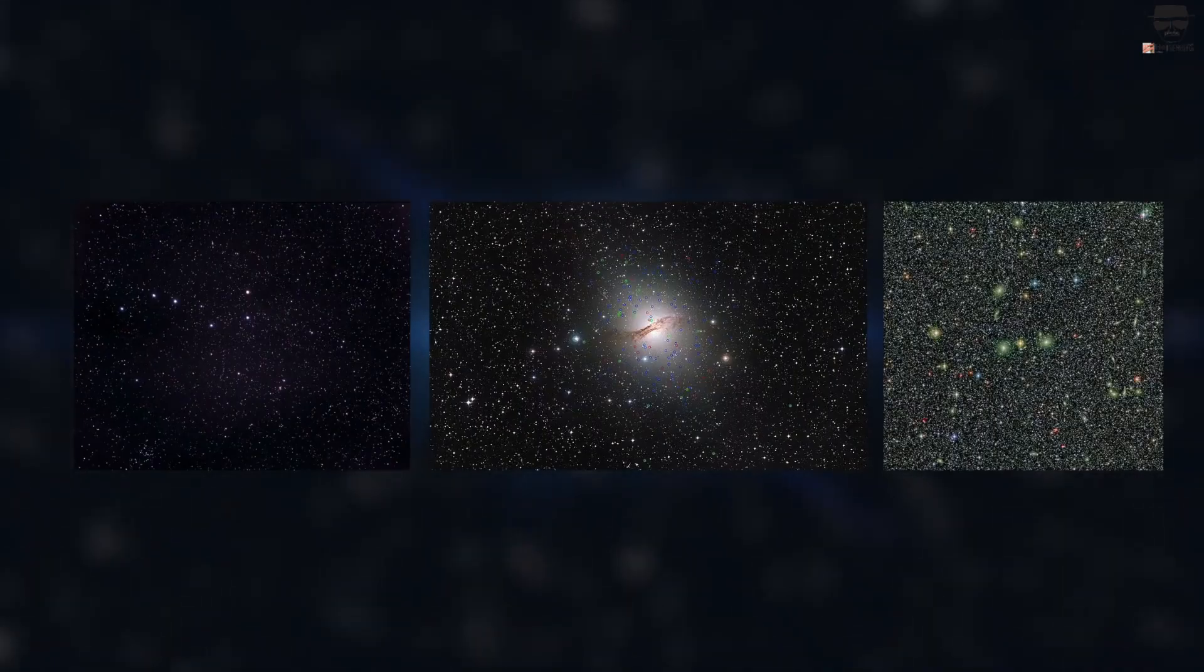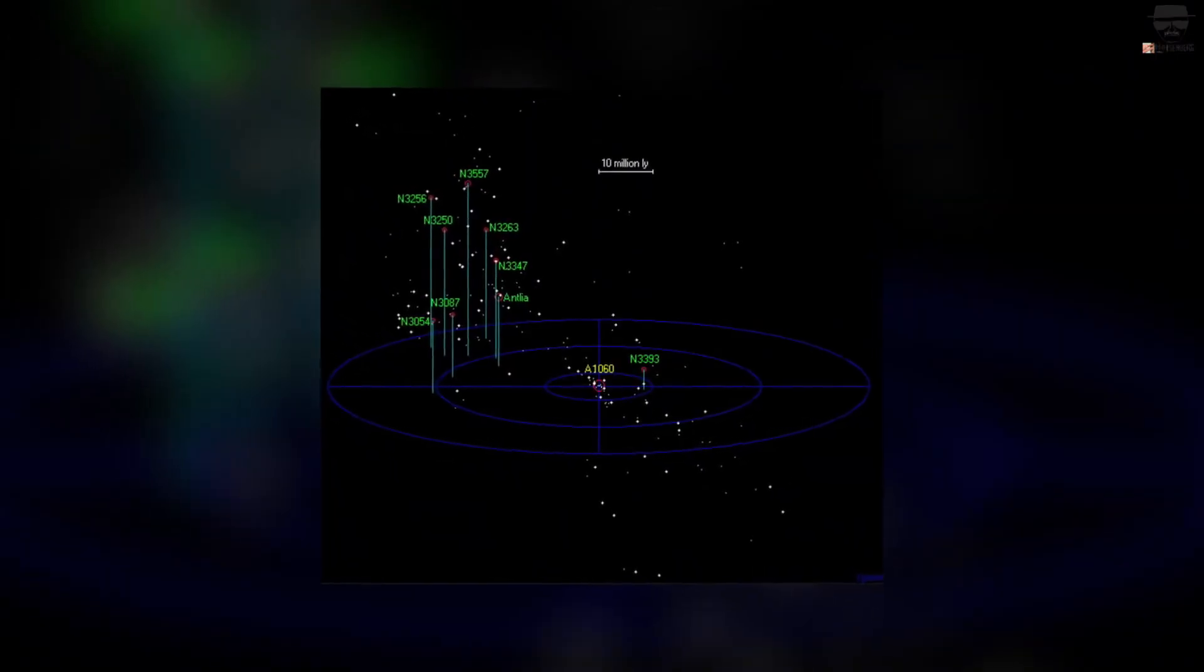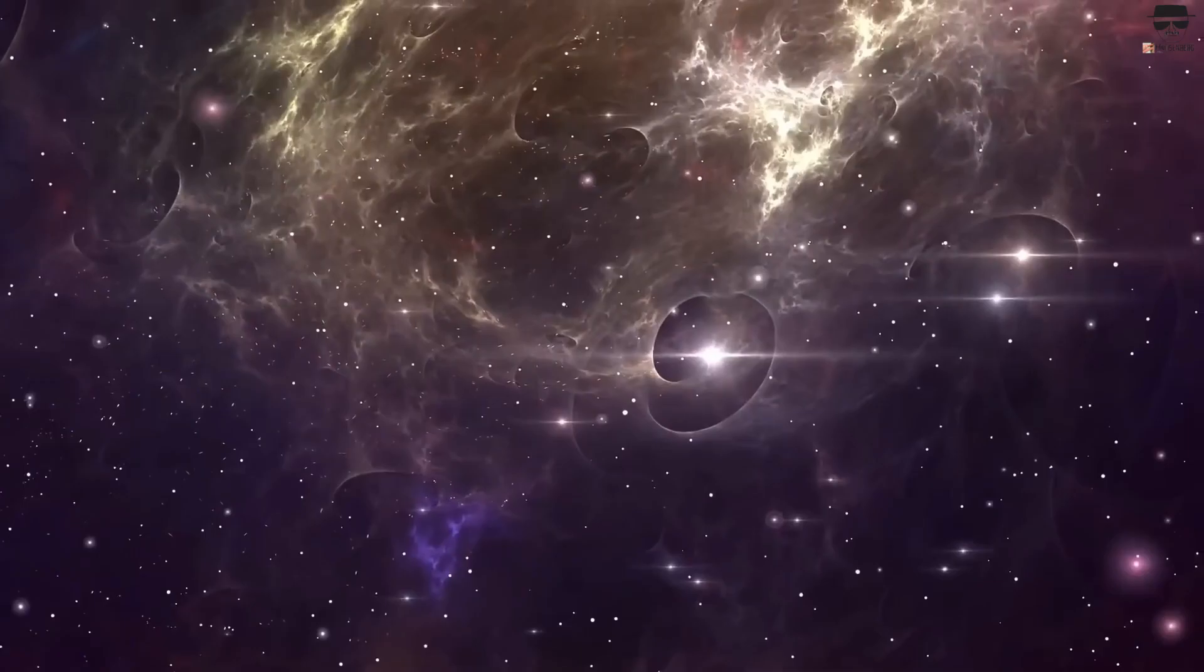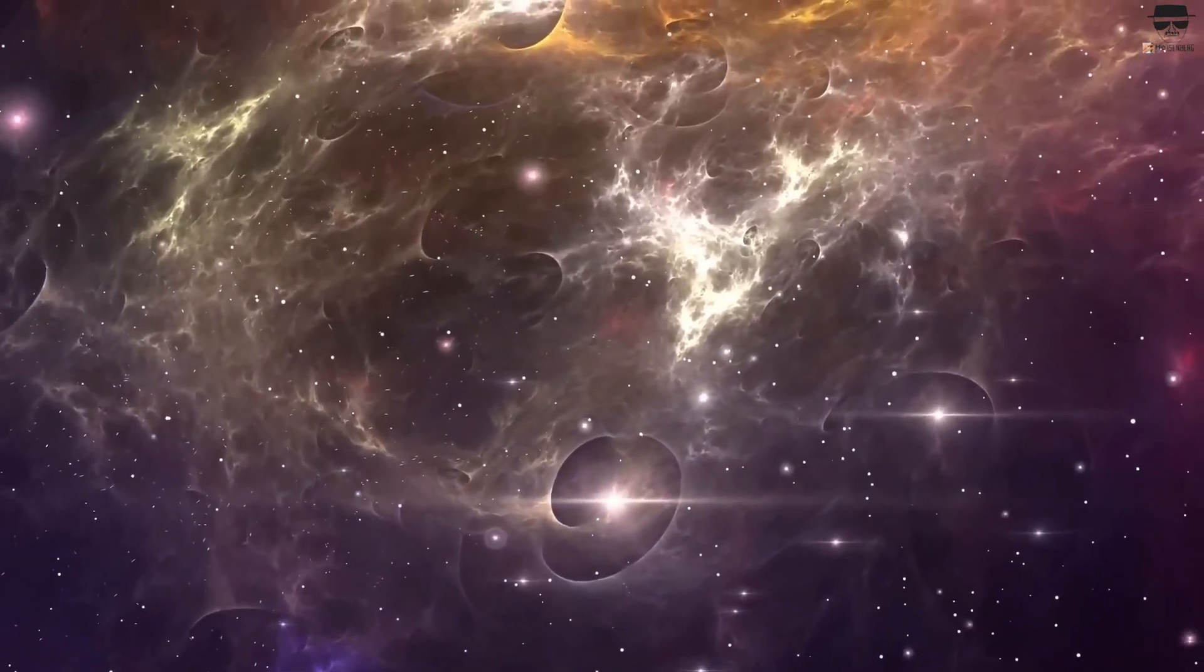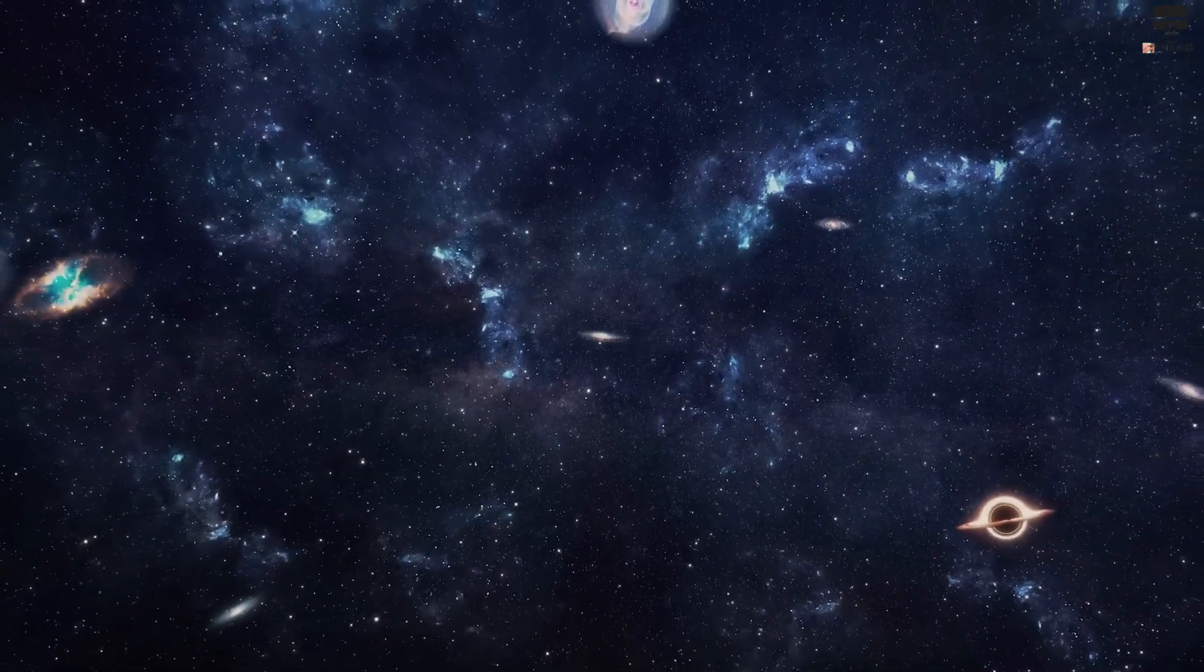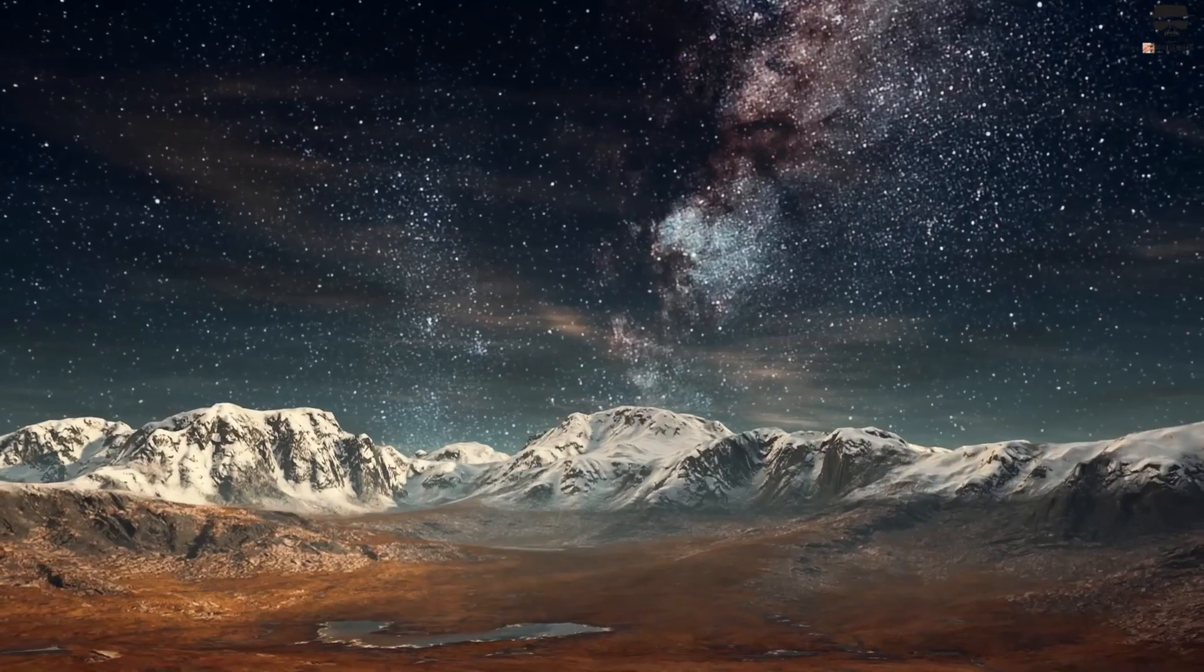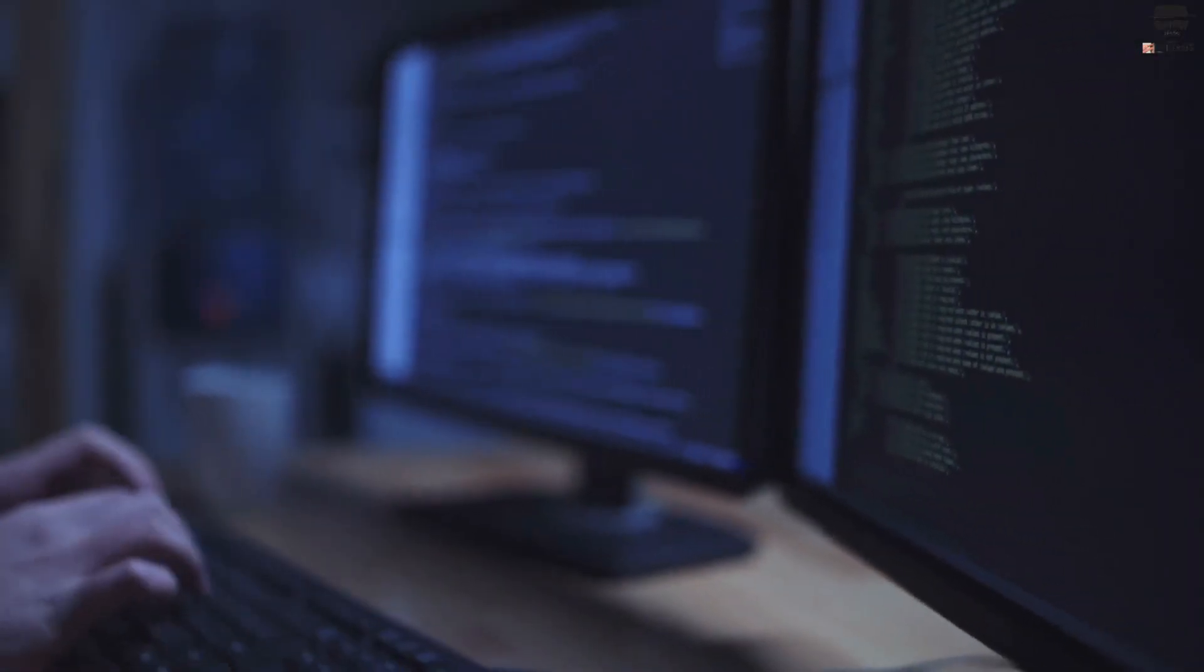For example, Coma Berenices, the Centaurus Cluster, or the Norma Cluster. These three clusters of galaxies form the Centaurus Supercluster, which appears as a node in the web of the cosmos. Five filaments of matter meet here, which is still unique to date. With the help of this software, the scientists have succeeded in illuminating the so-called Great Wall, where the Coma Heap is also located.